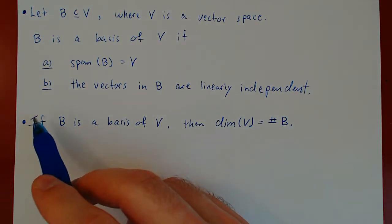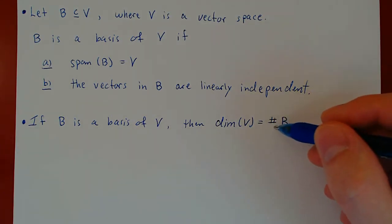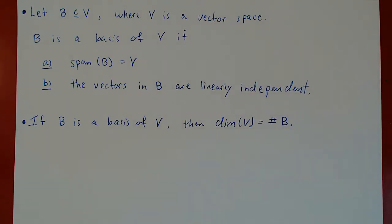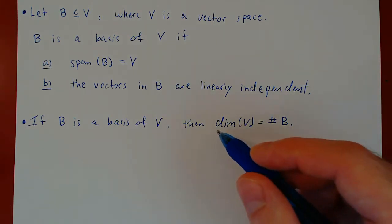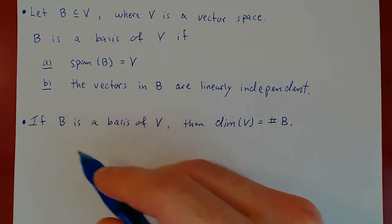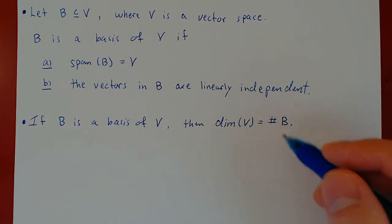If we have a basis of a vector space, the dimension of the vector space is defined to be the number of elements in any given basis. But there is something that could go wrong here. What if you find a basis of vector space V and I find a basis of vector space V independently? Is it possible that we find two distinct bases with a different number of elements? If so, then dimension would not be well defined. What we are going to prove is that any two bases of a vector space will have the same number of elements, which proves that the dimension is actually well defined.